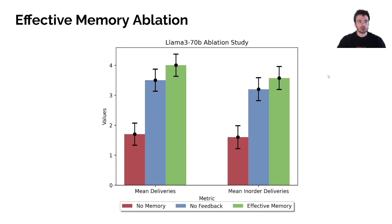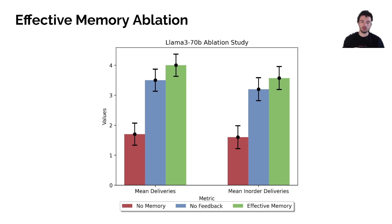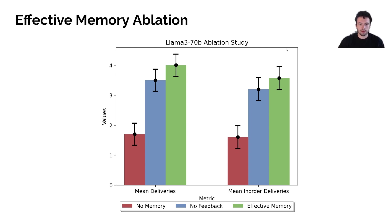We also wanted to test effective memory — whether memory plus feedback is a good combination. Feedback means that if an agent tries to take an invalid action, instead of updating their memory saying they did the action, we update it saying they attempted but failed because it was invalid. Using Llama 3 70 billion, agents with no memory at all get about 1.3 dishes, and with memory but no feedback, about 1.7 dishes on average.